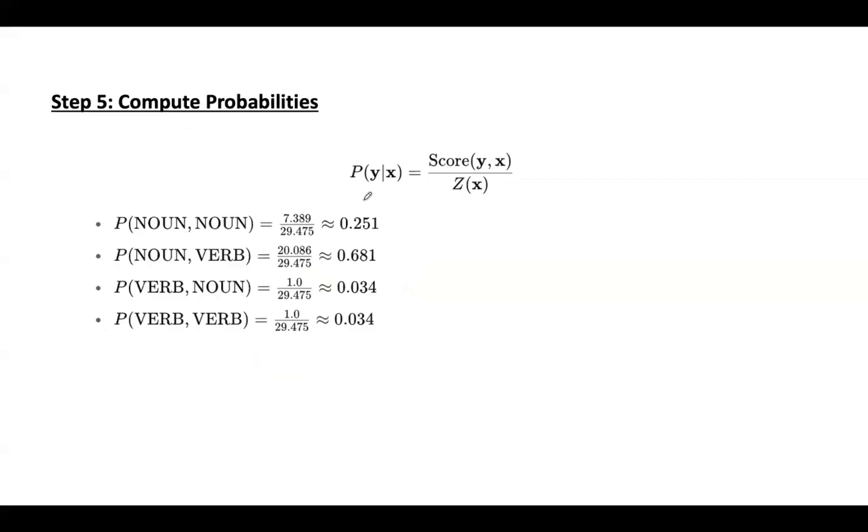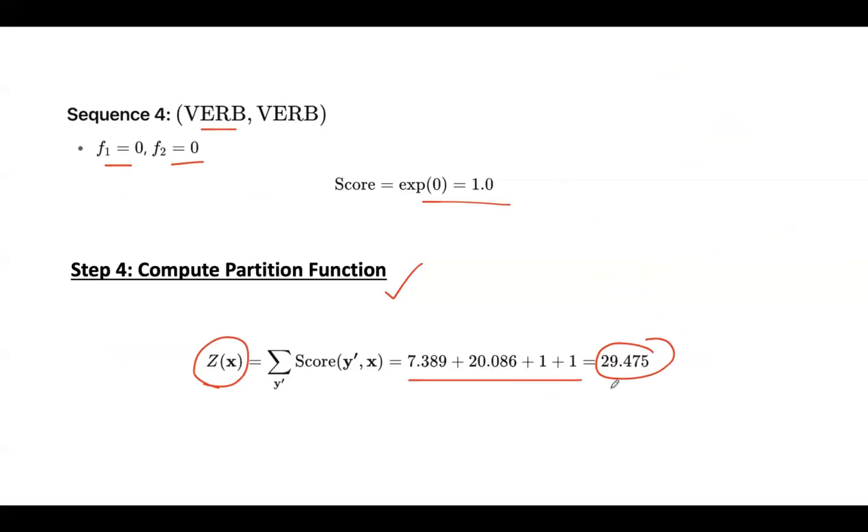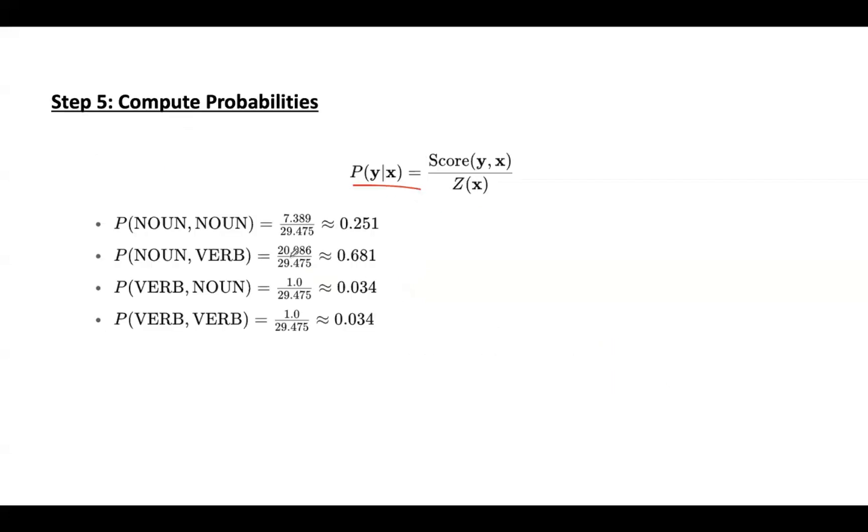Compute the probabilities. For that we are using this notation. For the combination noun, noun, the value is 7.389 divided by total score 29.475. Then noun, verb, so 20.086 divided by total value 29.475.